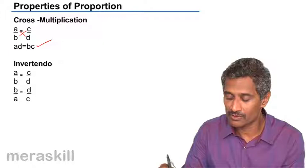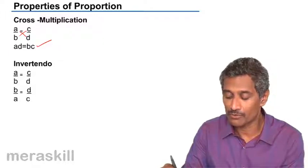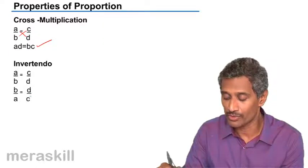Invertendo: if A/B equals C/D, the inverse ratio of A/B, that is B/A, is also equal to D/C.